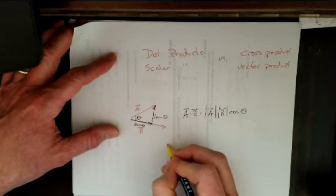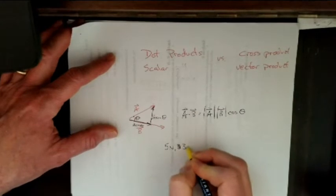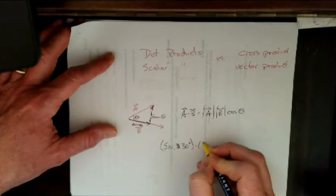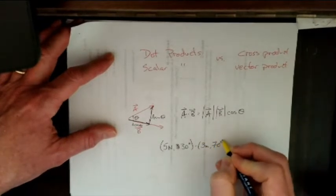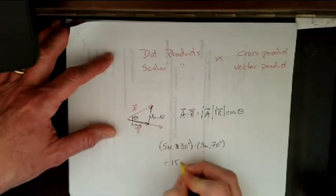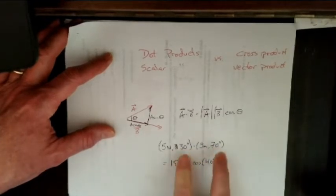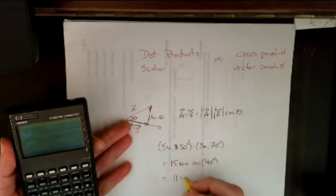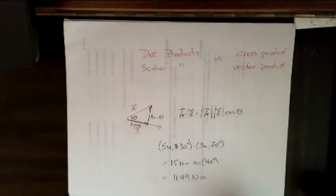So if I have two vectors, five newtons at a 30 degree angle, dot product with 3 meters at a 70 degree angle, that dot product is I multiply the magnitudes. So that's 15 newton meters times the cosine of the angle between them, which is 40 degrees. That's the angle between those two, the difference. And I end up with 11.49 newton meters, potentially a joule depends upon the situation.